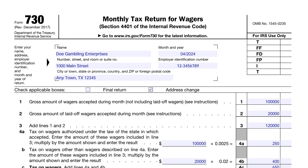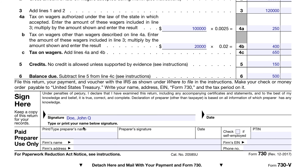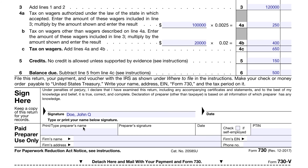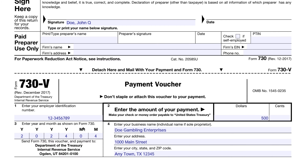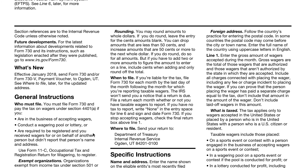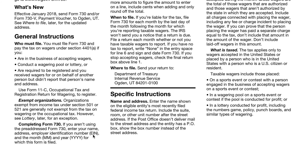In this video, we're going to focus on the form. It's a pretty straightforward one-page form — actually about three-quarters of the first page — and then there is an optional payment voucher at the bottom. We're talking about Section 4401A of the Internal Revenue Code. If you're in the business of accepting wagers, conducting a pool or a lottery, or if you're required to be registered and you've received wagers on behalf of another person but didn't report that person, then you must file this form.